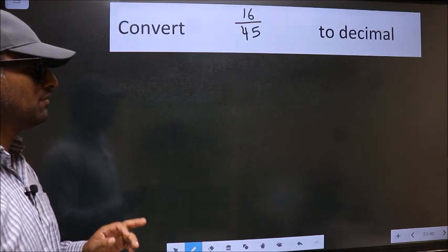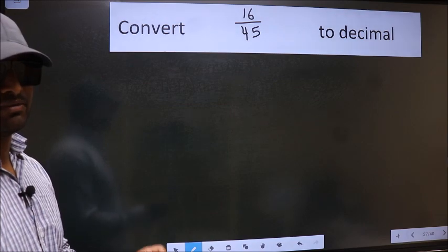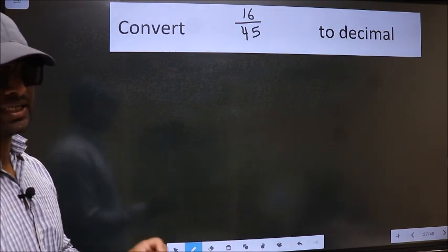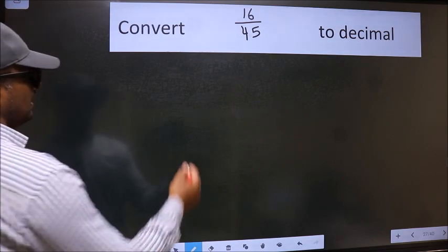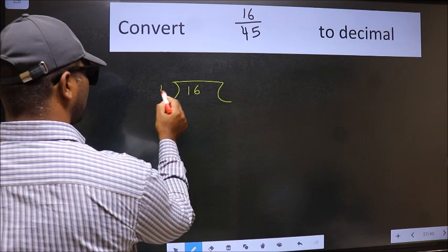Convert 16 by 45 to decimal. To convert to decimal, we should divide it, and to divide we should frame it in this way: 16 here, 45 here.